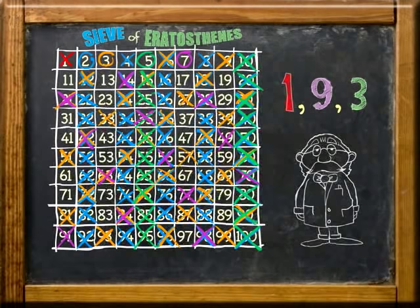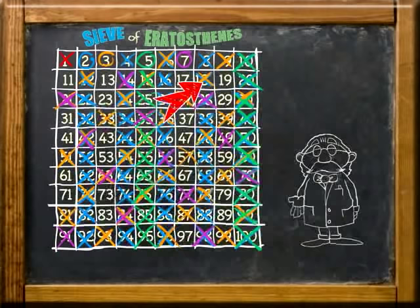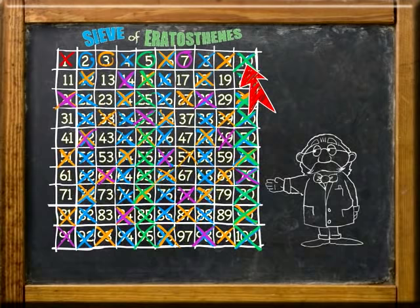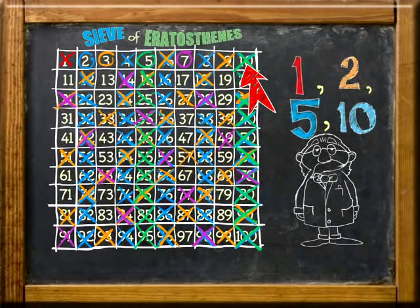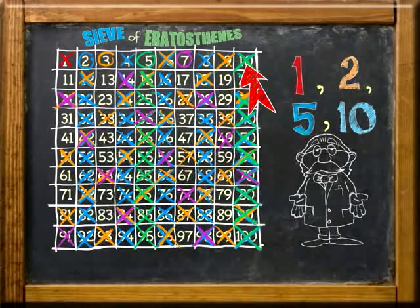All of the multiples of 9 have also been crossed out because they have other factors besides 9. For example, 18 is already crossed out because it has factors of 1, 2, 3, 6, 9, and 18. 10 is not a prime number because it has factors of 1, 2, 5, and 10. All of the multiples of 2 and 5 have already been crossed out, which also means that all of the multiples of 10 have been crossed out.